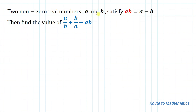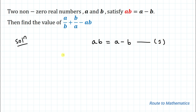So we are given that a and b are non-zero real numbers satisfying the equation ab equals a minus b. We are asked to find the value of a/b plus b/a minus ab. Let's call the given equation, equation 1, and proceed to find the required expression.